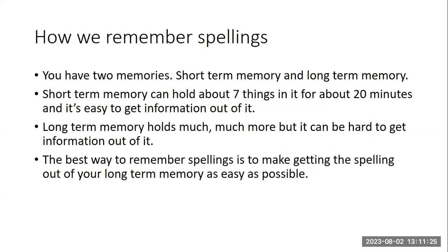Fundamentally, how we remember spellings works like this. In your mind, you've got two different types of memory: short-term memory and long-term memory. Think of it like a kitchen — the stuff you immediately know is on the kitchen side, but longer-term stuff you don't need right away is packed into the cupboard underneath. The short-term stuff is easy to access but there's not as much space for it, while long-term memory has a lot more space but it can be difficult to retrieve.